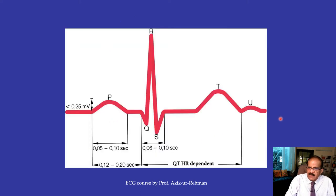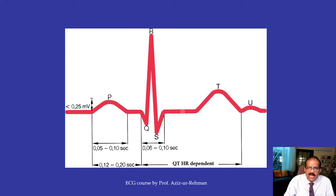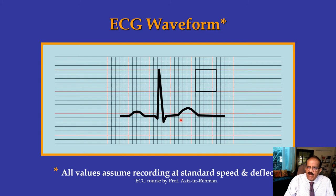So this is what we get — the ECG. The first wave we see is the P wave, which represents atrial depolarization. Then the PR interval, the QRS complex, the ST segment, the T wave, and the U wave. This is one cardiac cycle, and it keeps repeating throughout our life. All recordings, all intervals, and all amplitudes assume the ECG is recorded at the standard speed of 25 mm/s and standard deflection of 10 small squares per millivolt.